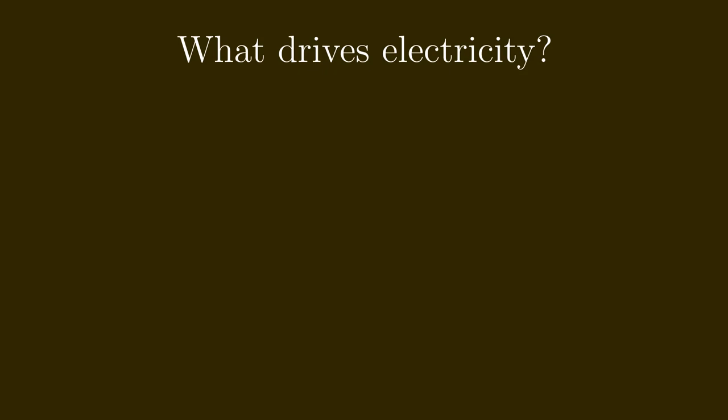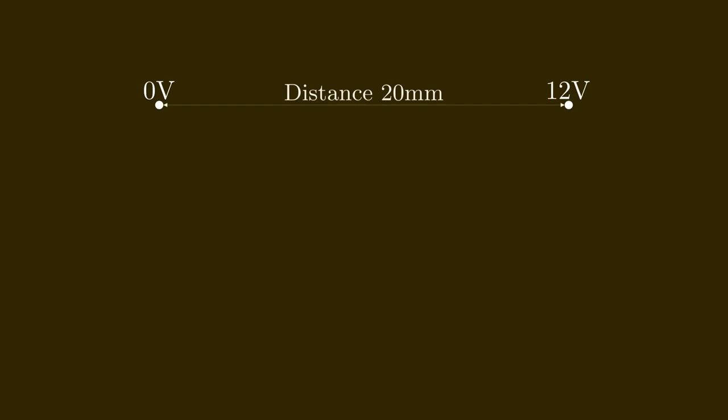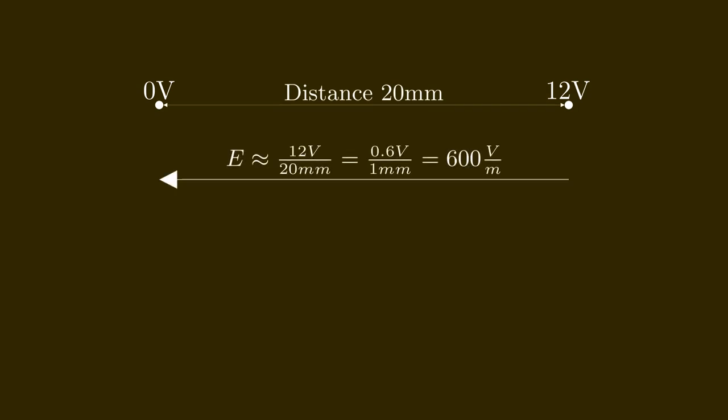What drives electricity? Let's assume we have a battery with 12 volts. So one of the connectors is at 0 volts and the other is at 12 volts. We say that the electric potential of one connector is 0 volts and that of the other connector is 12 volts. Let's assume the two connectors are 20 millimeters apart. Then between these poles we have an electric field. Roughly the field is the difference in potential — 12 volts — divided by the distance of 20 millimeters. So we end up with an electric field that is on average 600 volts per meter.